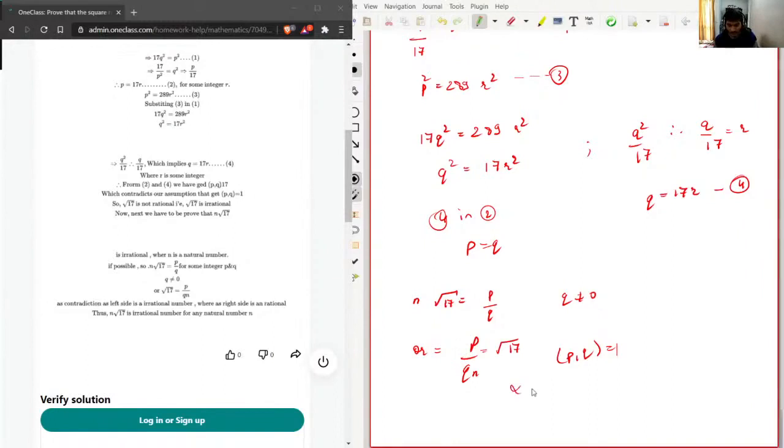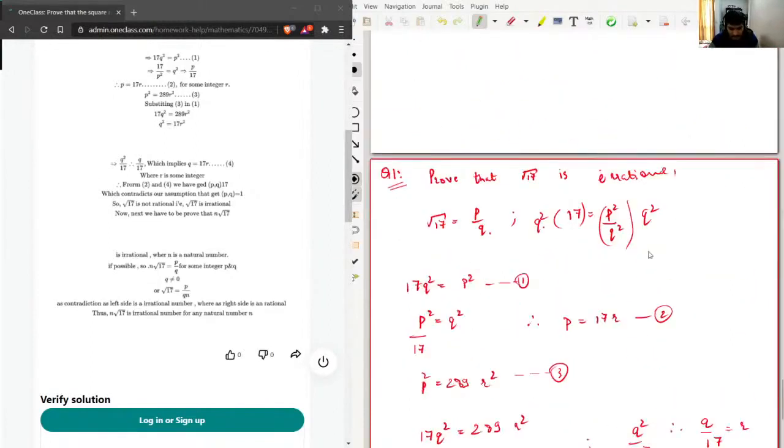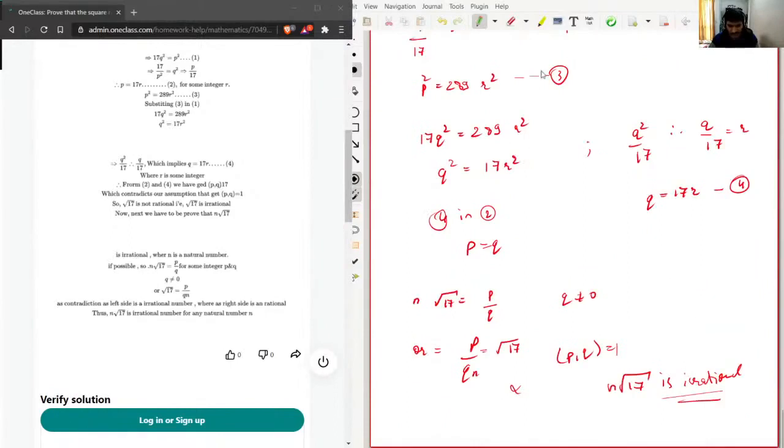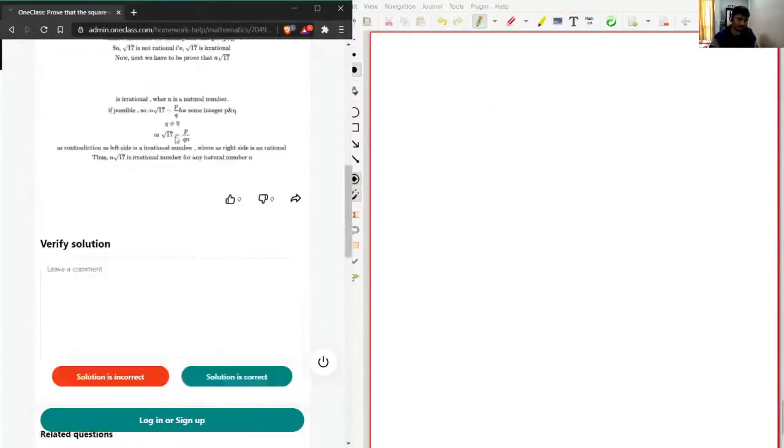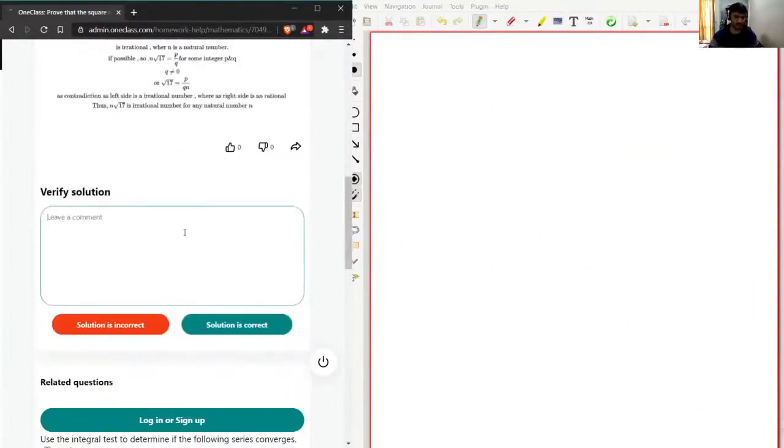Such kind of proofs are not mine—I have never encountered such kind of problems in my life, but yeah, I know that square root of 17 is irrational. So I'll just write: correct solution, good work.